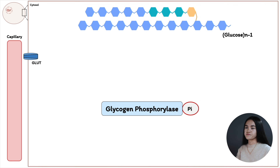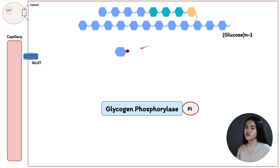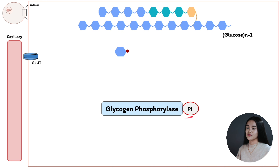Let's start with glycogen phosphorylase. Here we have branched glycogen — the linear stretch is joined by alpha 1-4 linkages and the branch is linked via an alpha 1-6 linkage. Glycogen phosphorylase breaks these alpha 1-4 linkages by adding inorganic phosphate. Think of it like a dodgeball game: glycogen phosphorylase is holding the dodgeball, which represents inorganic phosphate, and the glucose residues are holding hands.